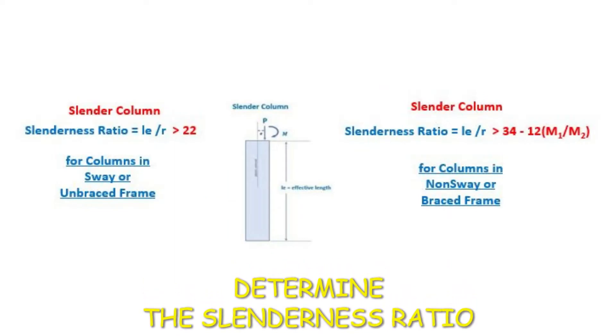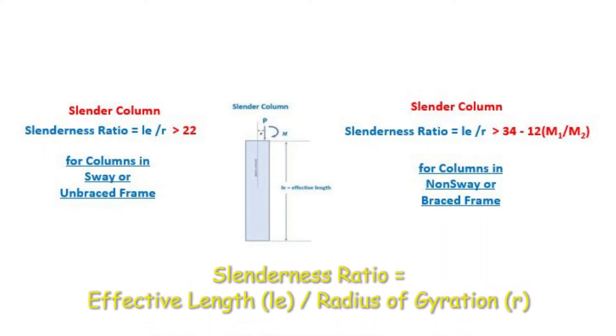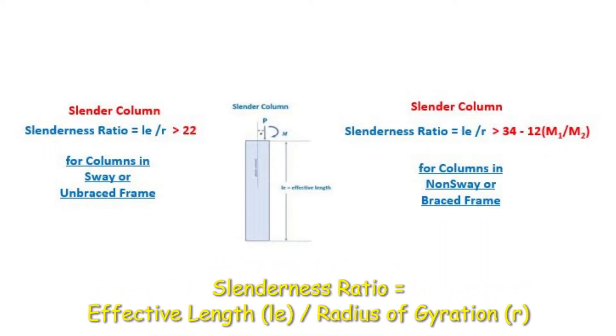Hey everyone, let's talk about slender columns. A column is slender if the ratio of its effective length to its radius of gyration is greater than 22.